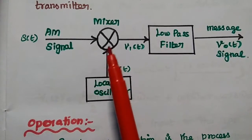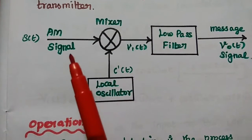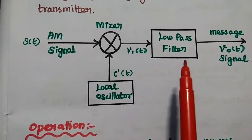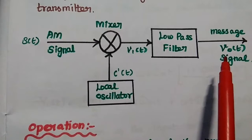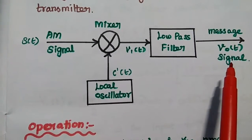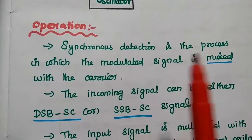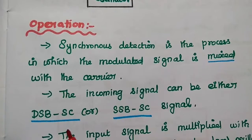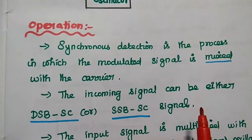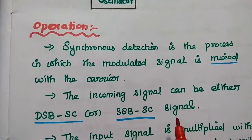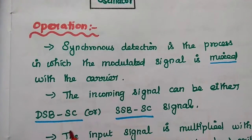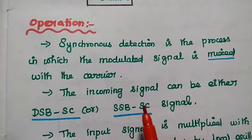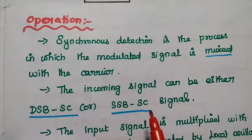In this, we are going to use a mixer where we combine both the received amplitude modulated signal and the locally generated carrier signal. The output of the mixer is given to the low pass filter. The output of the low pass filter is nothing but the original message signal. The incoming signal can be either double sideband suppressed carrier or single sideband suppressed carrier. This synchronous detector is mainly used to detect either DSBSC or SSBSC signal, not double sideband with full carrier or vestigial sideband.